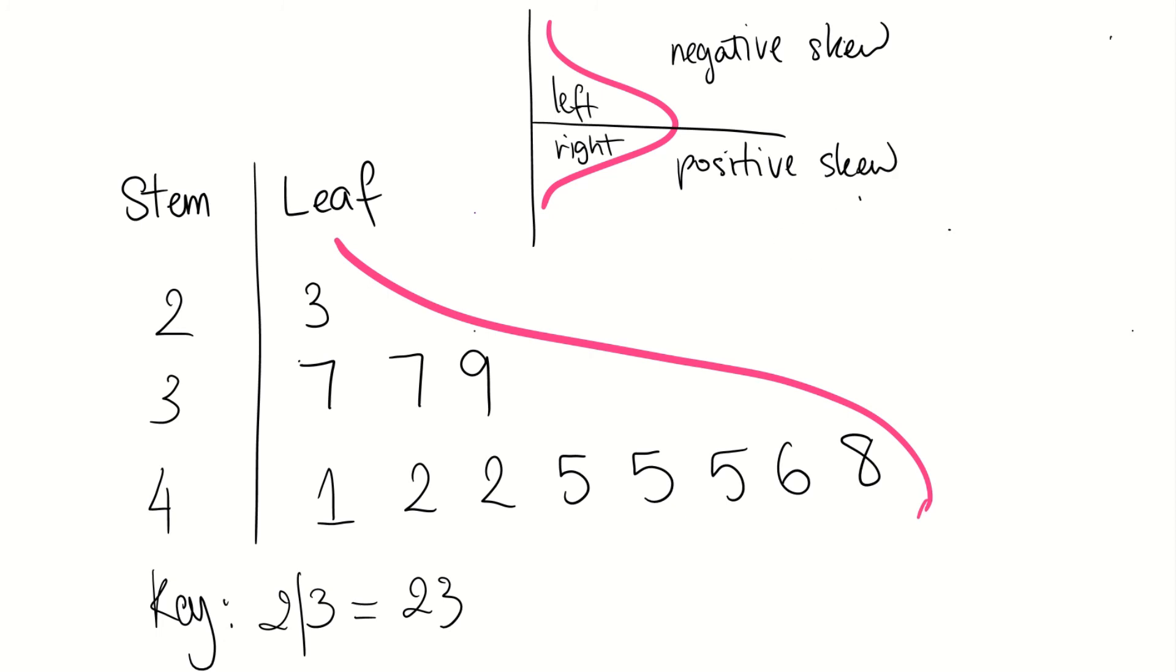Okay. So, which one does our actual stem leaf plot look similar to? It's this one. It's a negative skew. And don't be alarmed if some of your stem leaf plots don't look like a negative, positive or symmetrical skew. Sometimes, it doesn't have any. But for this one, it's negative.